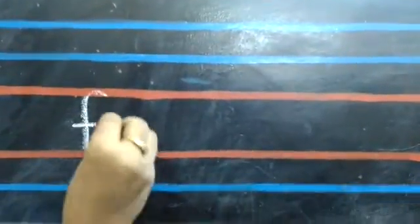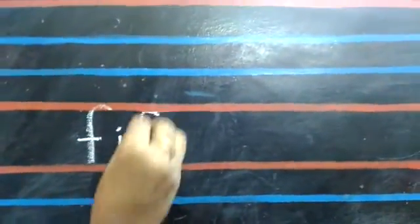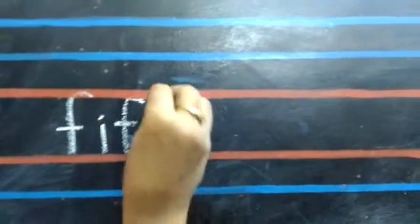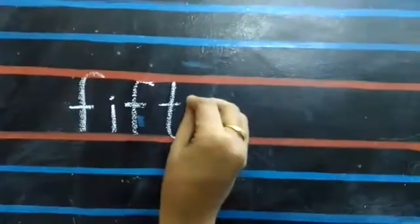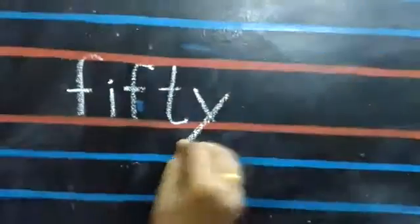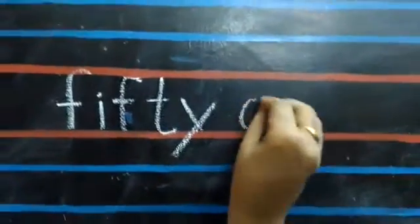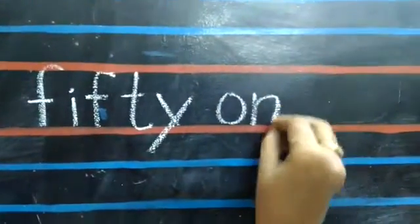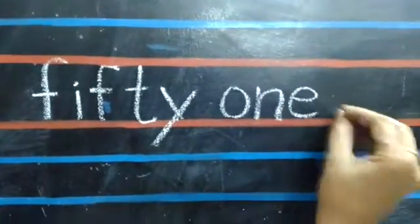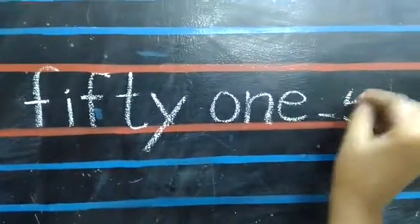Children, you all know how to write spellings. You all know how to write 50. F-I-F-T-Y, fifty. One: O-N-E, 1. Fifty-one, 51.